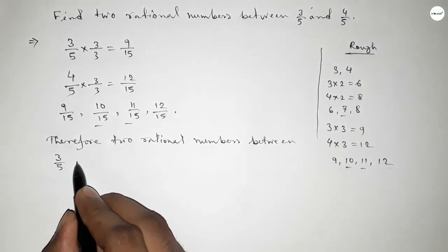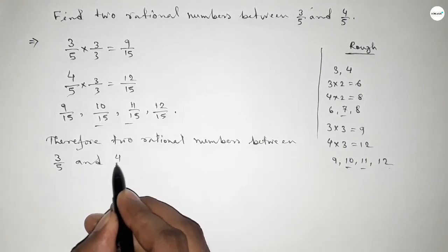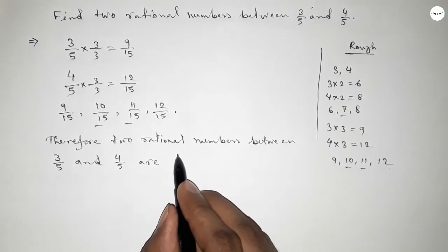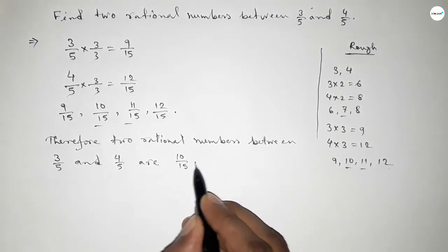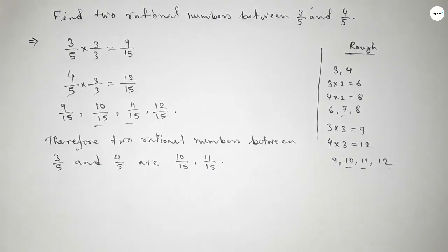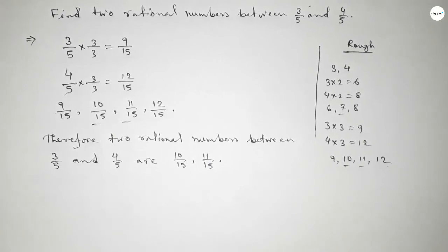...10/15 and 11/15. This is the process to find two rational numbers between 3/5 and 4/5. That's all, thanks for watching.